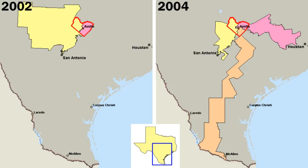Washington hoped that political parties would not be formed, fearing conflict and stagnation. Nevertheless, the beginnings of the American two-party system emerged from his immediate circle of advisers. Hamilton and Madison ended up being the core leaders in this emerging party system. In modern times, in partisan elections, candidates are nominated by a political party or seek public office as an independent. Each state has significant discretion in deciding how candidates are nominated, and thus eligible to appear on the election ballot.